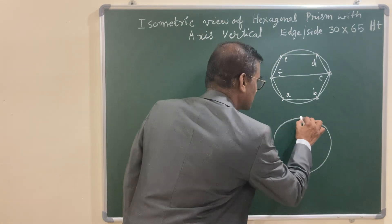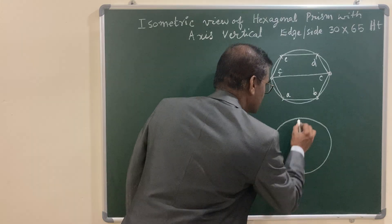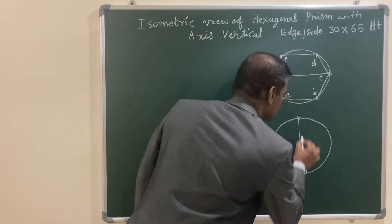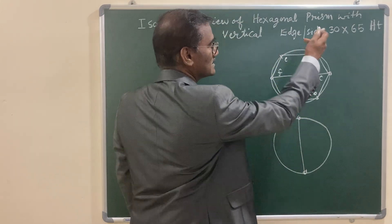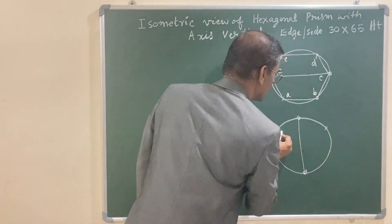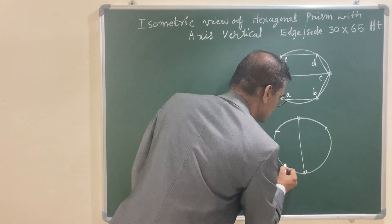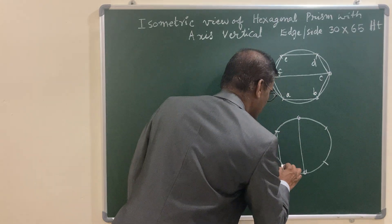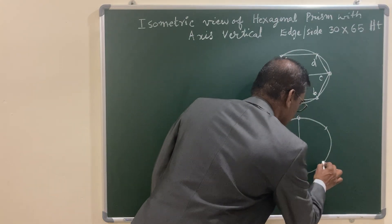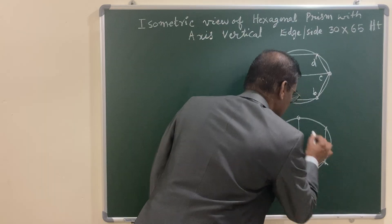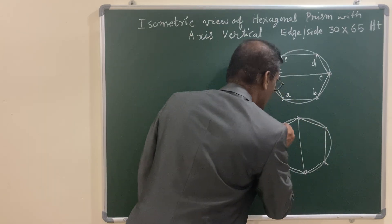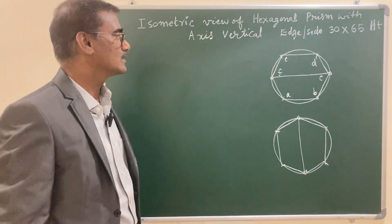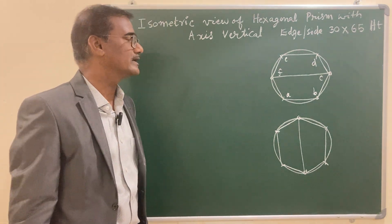For the other configuration — keeping the edge vertical — draw a vertical diameter. Using the endpoints as centers with the same radius of 30 mm, cut either side to get the vertices, resulting in a hexagon with vertical edges. So there are only two possible configurations.